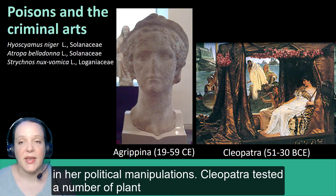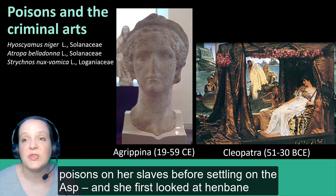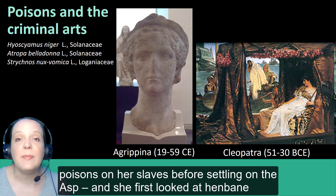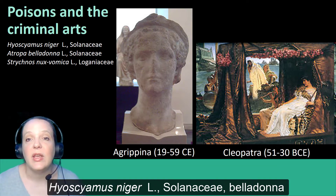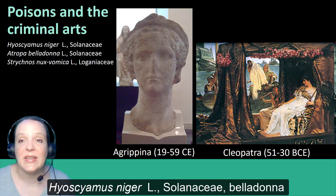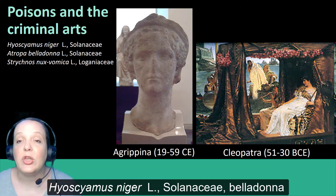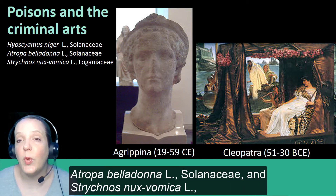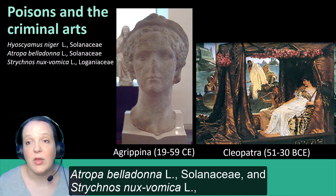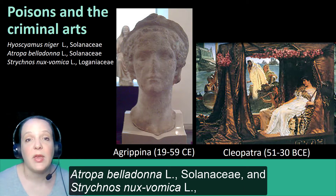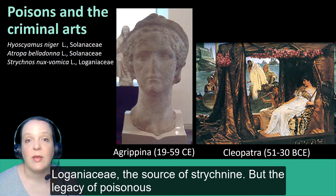Cleopatra tested a number of plant poisons on her slaves before settling on the asp. She first looked at henbane, or Hyoscyamus niger, in the Solanaceae family; Belladonna, scientifically known as Atropa belladonna in the Solanaceae family; and Strychnos nux-vomica in the Loganiaceae family, the source of strychnine.